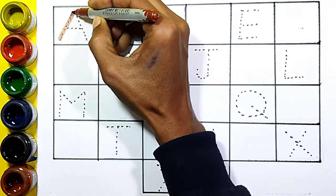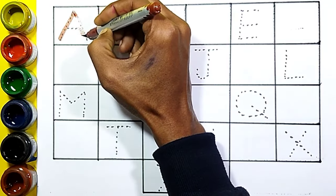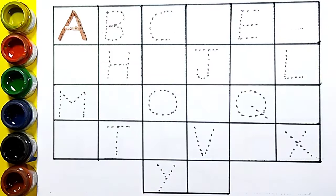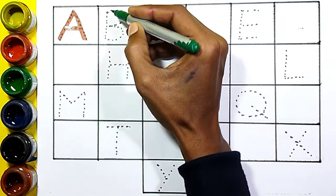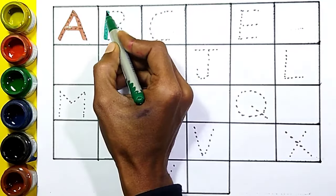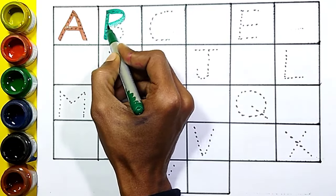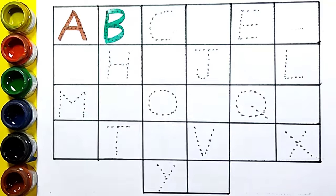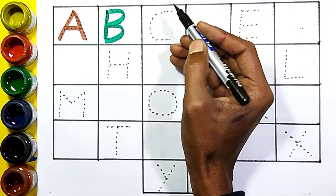A, A for apple, green color. B, B for ball, black color.